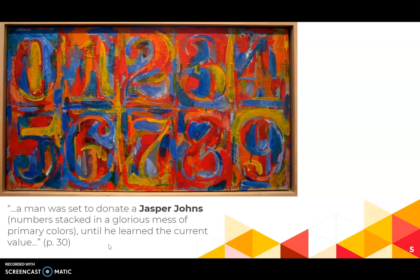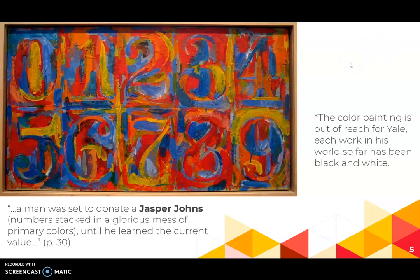This painting comes up when Yale is talking about one of his acquisitions at work — mentioning that a man was set to donate a Jasper Johns numbers painting, stacked in a glorious mess of primary colors, until he learned the current value. This is the painting that was supposed to be donated but eludes Yale's grasp. It's interesting to think not just about the art that exists in the world of The Great Believers, but the art that escapes them. This vivid color painting is out of reach for Yale, while so much of his world so far has been in black and white. There's also a certain order and predictability in this painting that escapes him — telling given how unpredictable his life is right now.